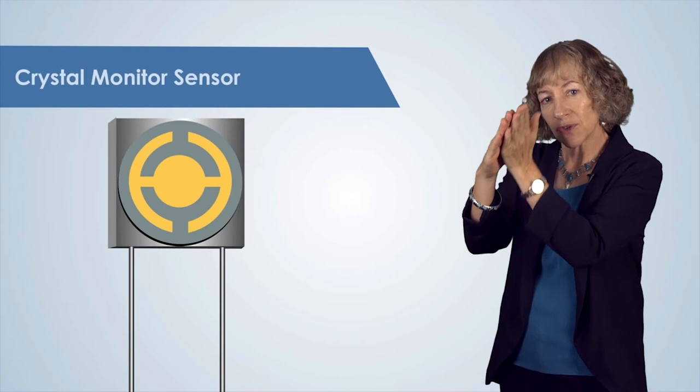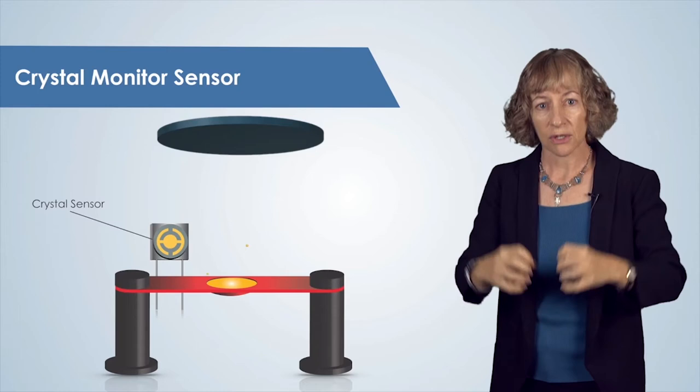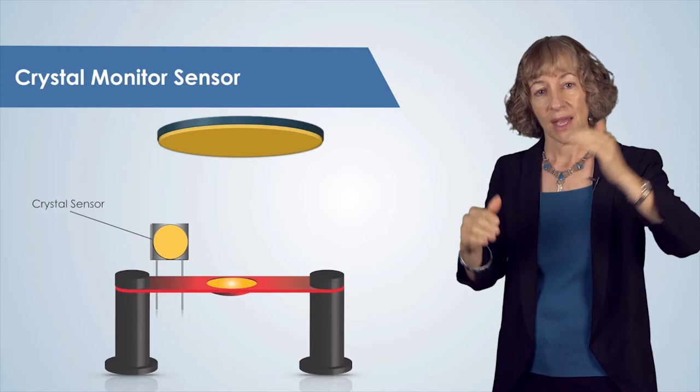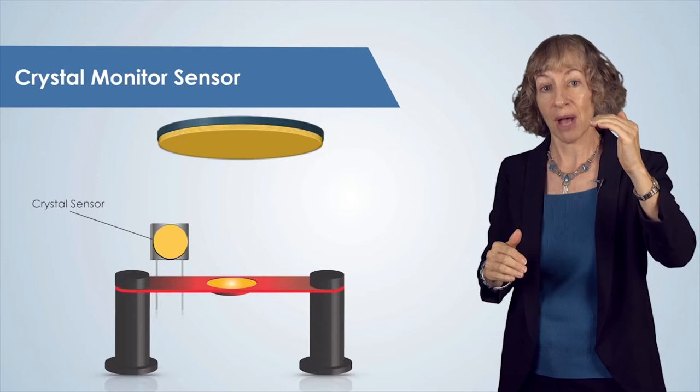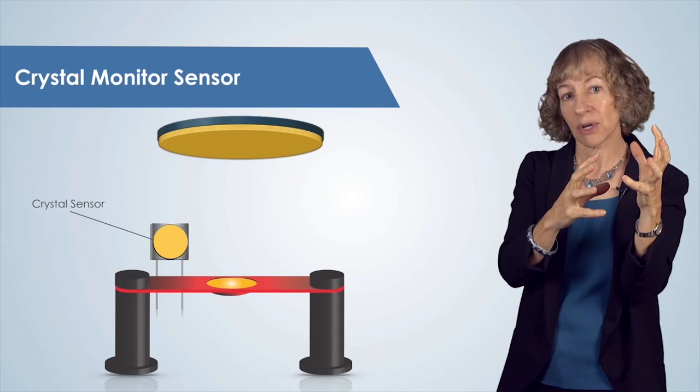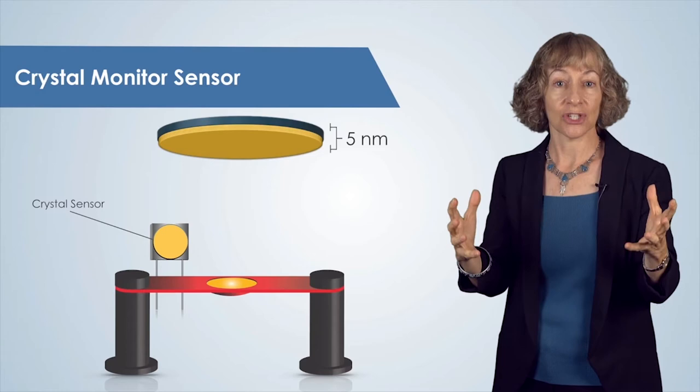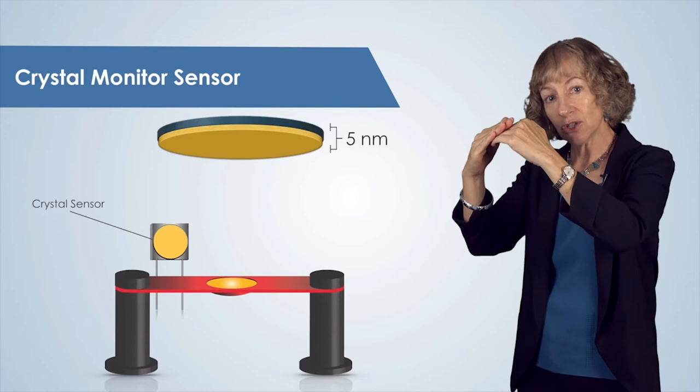When should we stop depositing our source material onto the substrate? We typically have a target thin film thickness for each process. So we want to monitor the thickness of the deposited film on the substrate in real time during the deposition. To do this, we place a crystal sensor in the vacuum chamber so that the source material is deposited onto the sensor at the same rate as onto our substrate. This crystal sensor vibrates, and the vibration frequency changes as the film is deposited, enabling us to calculate the deposited film thickness in real time.